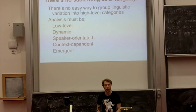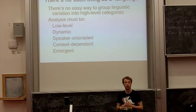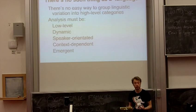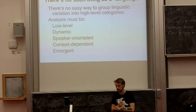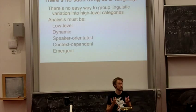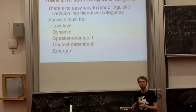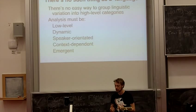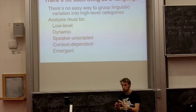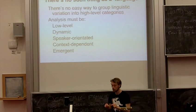Here's my conclusion: there's no such thing as a language — that is, there's no easy way to group linguistic variation into a high-level category. Although we're sort of taught this, and comparing English versus German has been very productive for linguistics, for evolutionary linguistics the analysis has to be low-level, dynamic, and speaker-oriented. The languages have to be able to change their structure. You have to take into account that these languages are actually spoken by individual people, and that one person can speak two languages. It has to be context-dependent, and it has to be an emergent property.